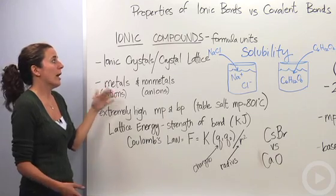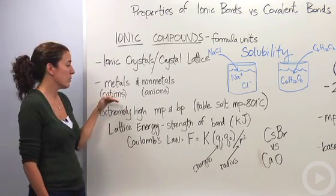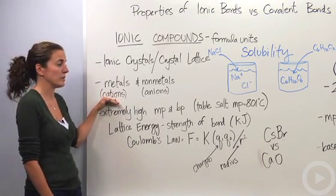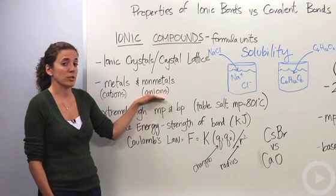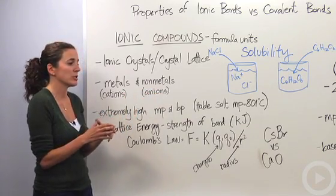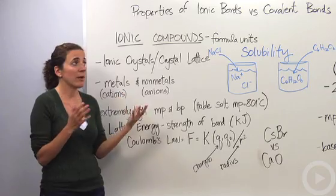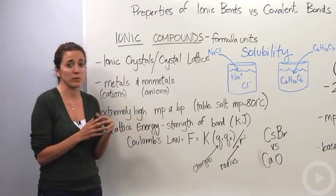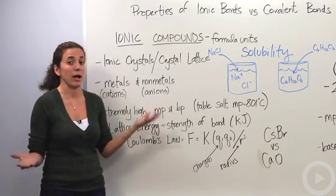Ionic compounds are composed of metals which are cations or positively charged particles, and non-metals which are anions and negatively charged particles. When they're held together, they create what we call salts. Anytime you hear the word salt, it's not necessarily table salt; it can be any type of ionic compound.